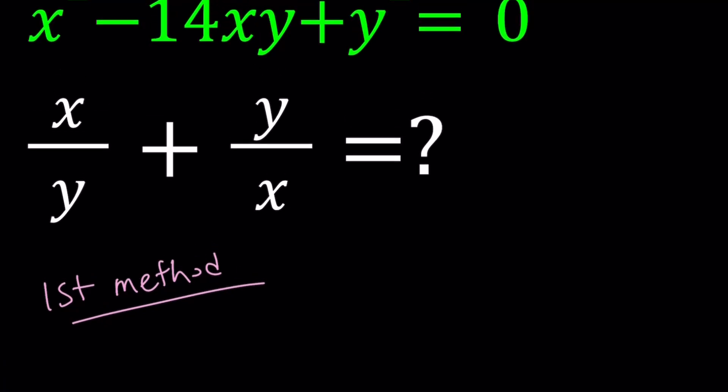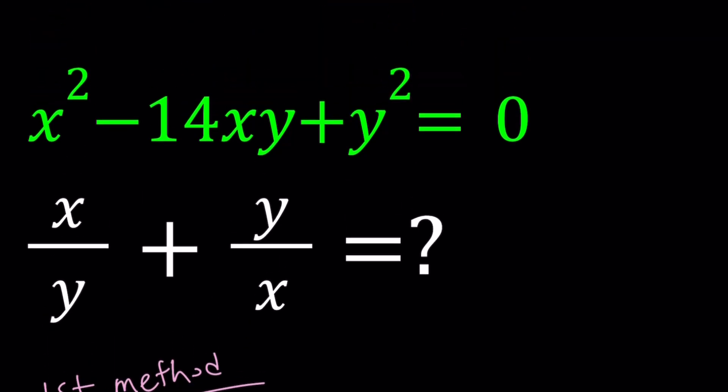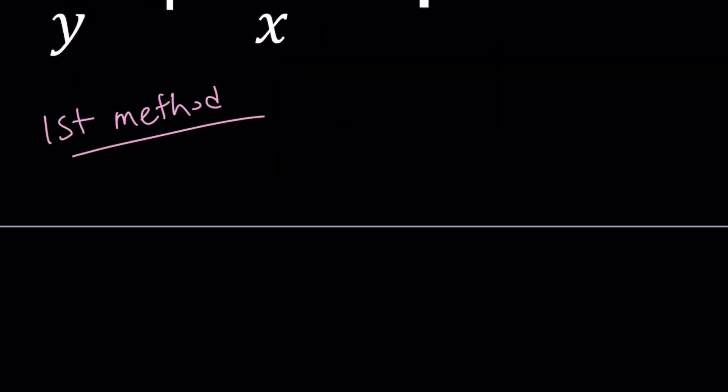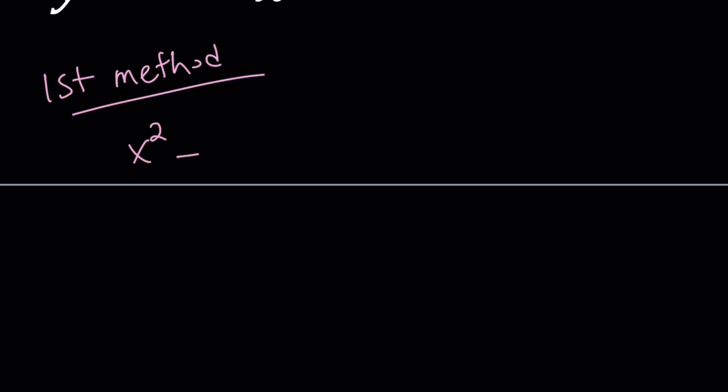So for my first method, I'm going to go ahead and divide both sides by y squared. So here's my original equation. And I will divide everything by y squared.